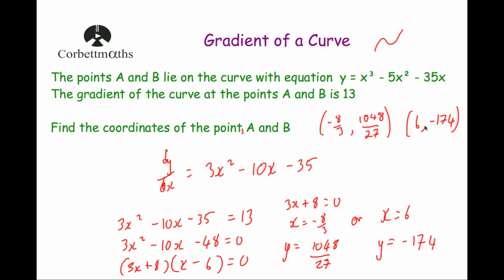To summarise: to find the gradient of a curve at a particular point, differentiate to find dy by dx and substitute in the x-coordinate. If you know the gradient at a particular point and want to find the coordinates, differentiate, set dy by dx equal to the gradient, and solve to find the coordinate.